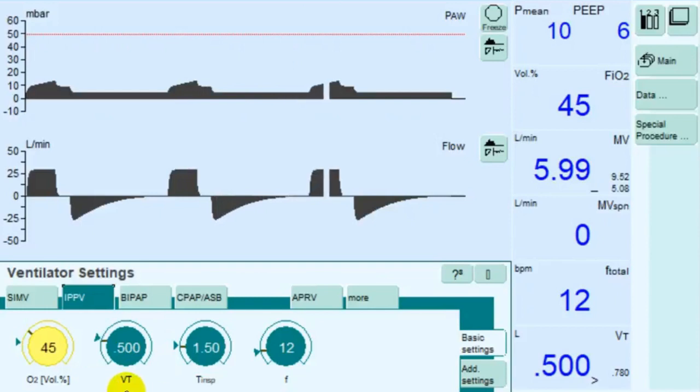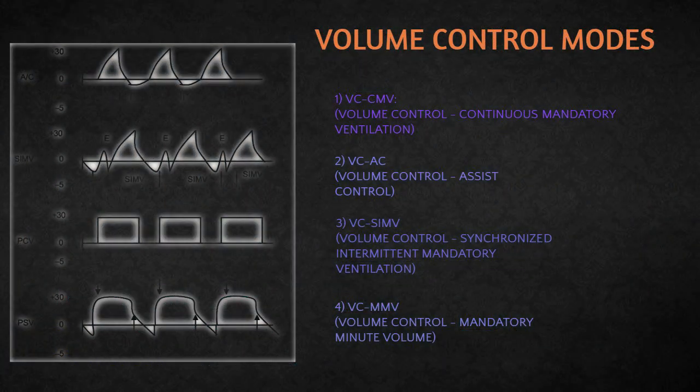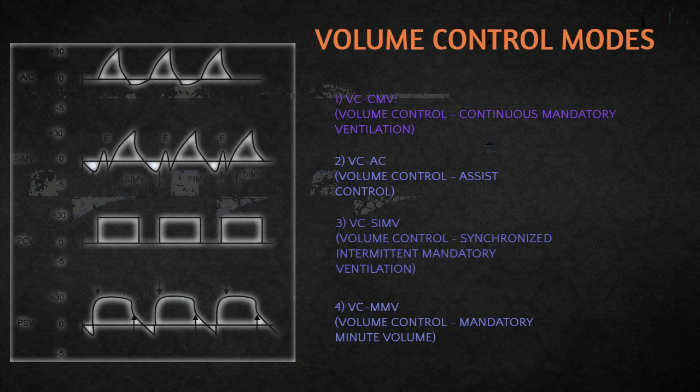The inspiratory pressure is the resulting variable and changes dependent on the changing lung mechanics. Volume control ventilation has different modes. They are as follows: Volume control continuous mandatory ventilation, Volume control assist control, Volume control synchronized intermittent mandatory ventilation, Volume control mandatory minute volume.